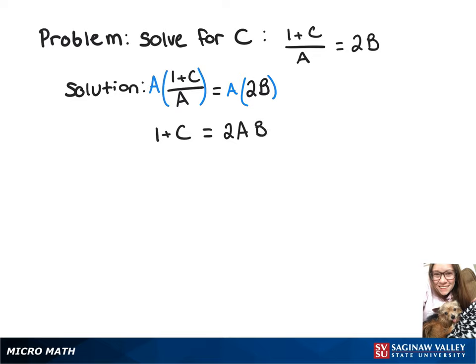Now we'll subtract 1 from both sides, and that'll give us c equals 2ab minus 1.